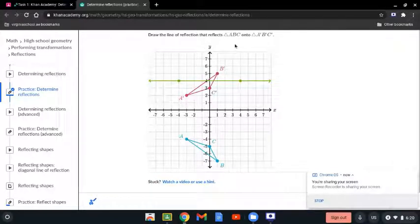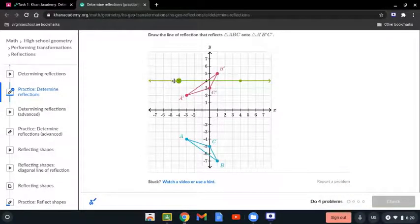Draw the line of reflection that reflects ABC onto A', B', and C'. So we have two figures right here, and we have the line of reflection. So what it's trying to tell us is that we should draw or drag this line in between the two figures.